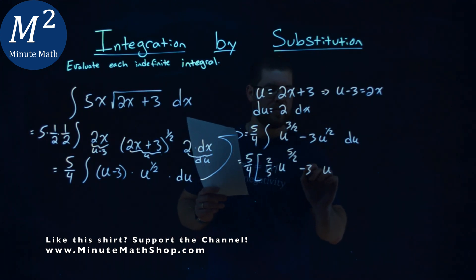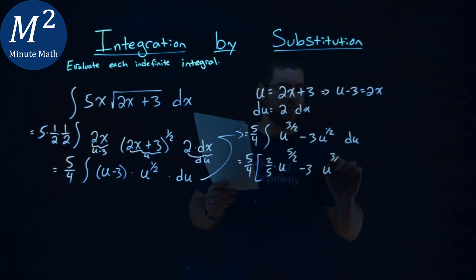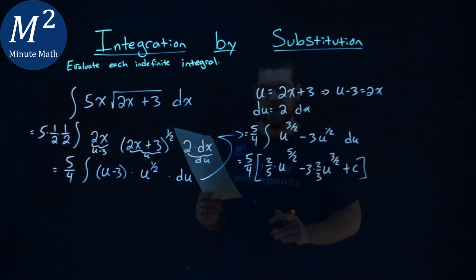Minus, same thing here, 3 is still there. 1 half plus 1, or 2 over 2 is the 3 halves. Flip that over, multiply up front, a 2 thirds. And then we still have now a plus c going on here.